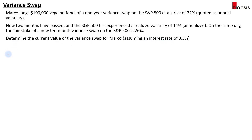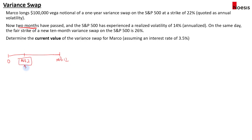So let's draw the timeline so it's clearer. When Marco entered into the variance swap, it was for a one-year period or a 12-month period, and now two months have passed. So I'll just write this as month two — this is where Marco is at now, and we are calculating the value of the swap to Marco at month two.